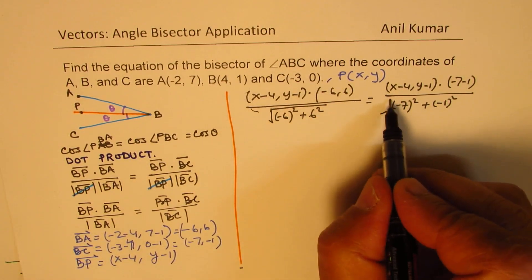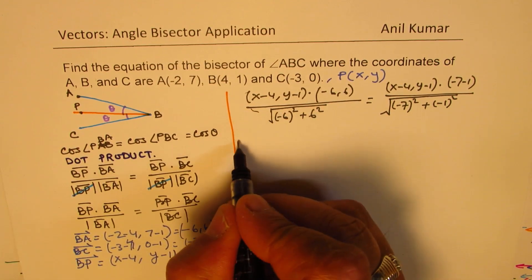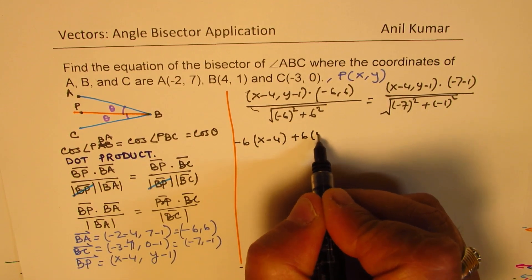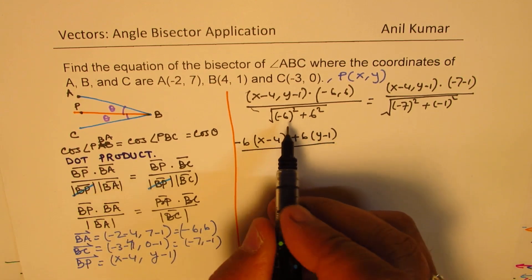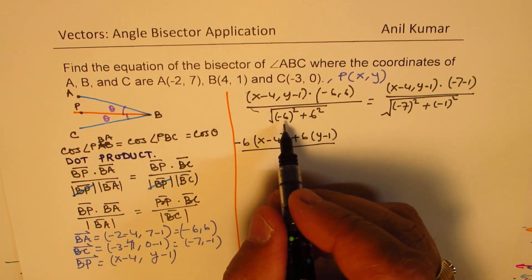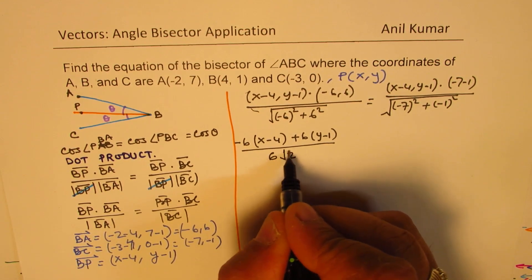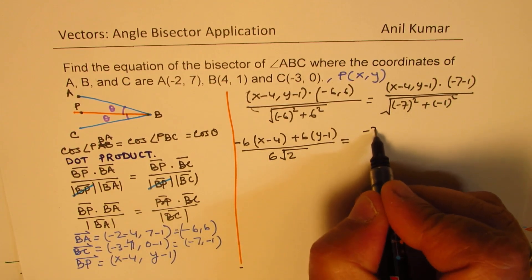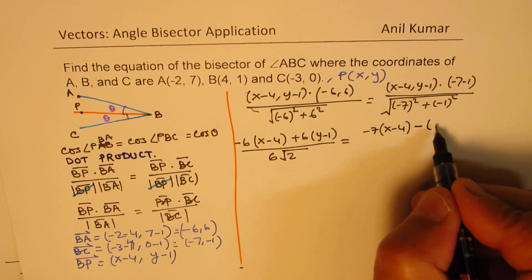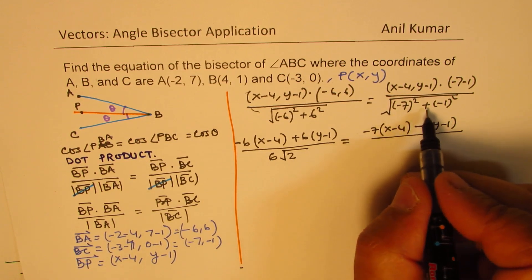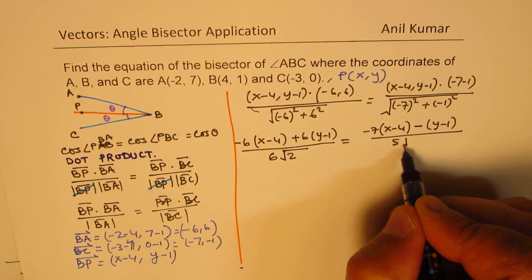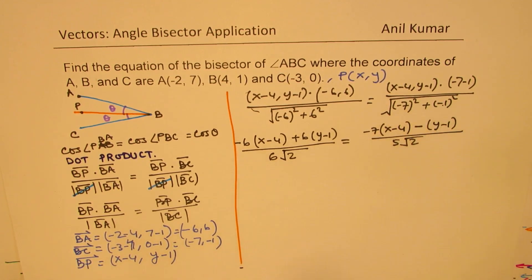Okay, let's do the dot product. So, we get here -6 times (x - 4) plus 6 times (y - 1) over, that is 36, and 36, 2 times 36, or square root of 36 is 6, you can write this as 6√2, should be equal to -7 times (x - 4) minus (y - 1) over, this is square root of 49 + 1, which is 50. So, 50 could be written as 5√2, 25 times 2.